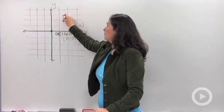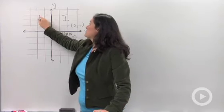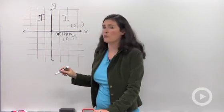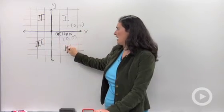This we call quadrant one, and you use the Roman numeral one, which looks like capital I. This is quadrant two, Roman numeral two, three, and quadrant four is IV.